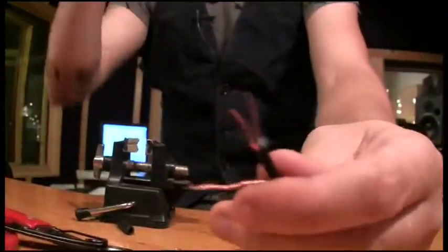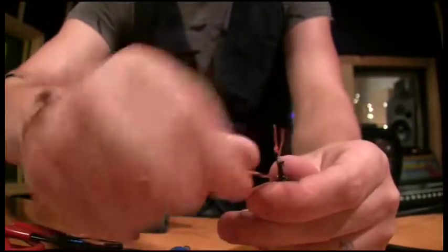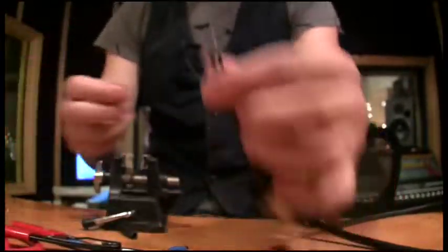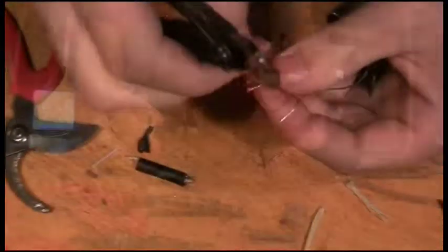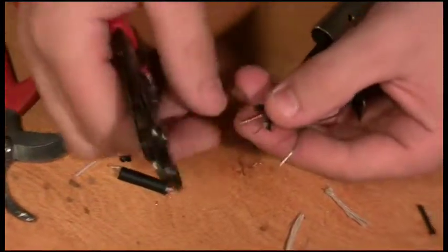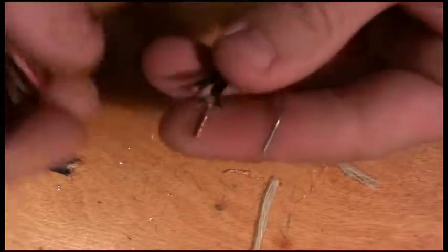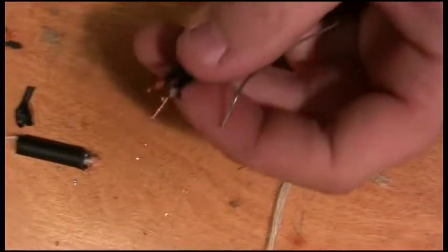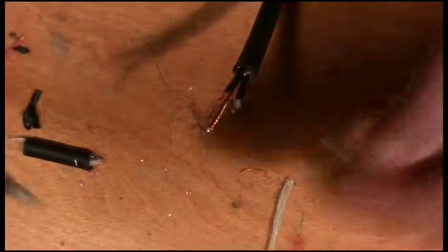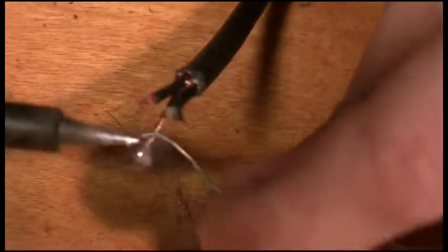Alright, so when you have your positive, negative, and your ground all twisted and exposed to the wires, you're ready to go. And for XLR cables you want them approximately like the same length as you come out. So that's pretty close. The first thing you want to do is you want to tin the tip of all of your wires.